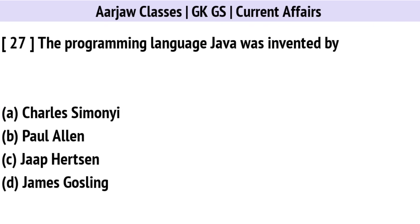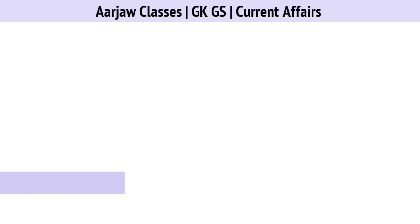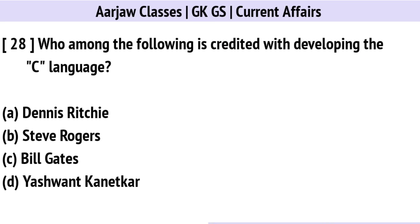The programming language Java was invented by whom? The correct option is D: James Gosling.